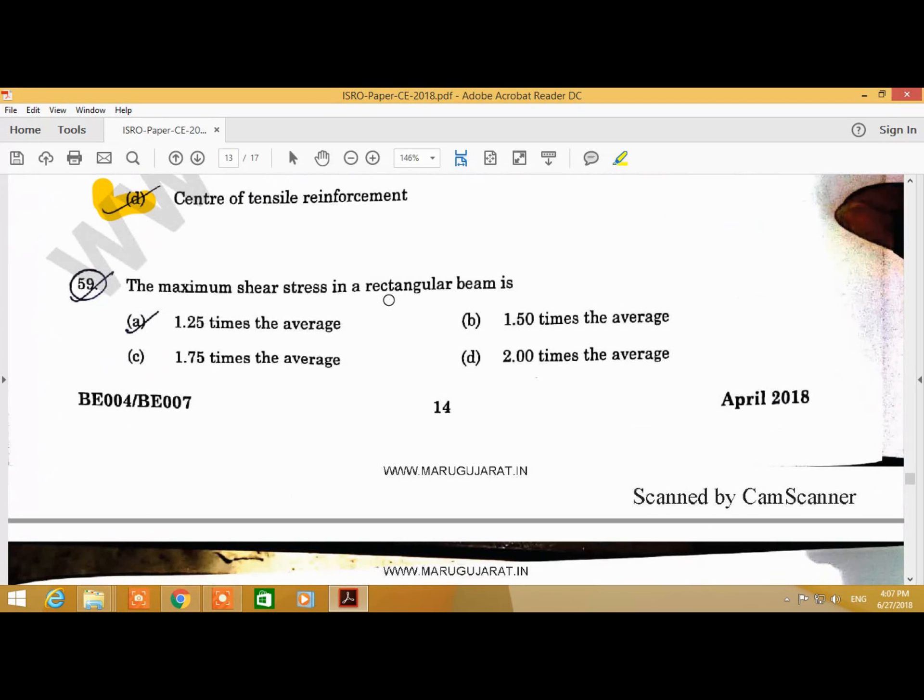Question Number 59: The maximum shear stress in a rectangular beam is. Answer is B, 1.50 times the average.